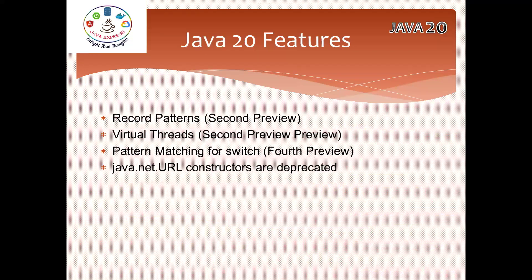In Java 20, record patterns is in its second preview, virtual threads is again in second preview, and pattern matching is in its fourth preview. Also, java.net.URL constructors are deprecated in Java 20, and another approach can be used instead. These are the Java 20 features.